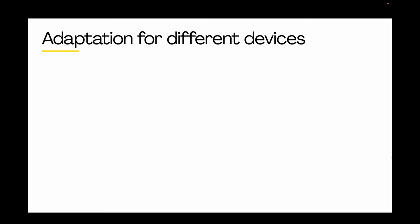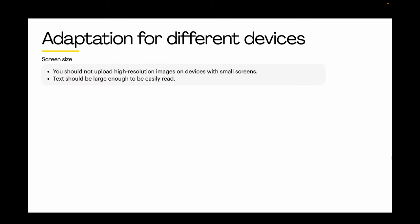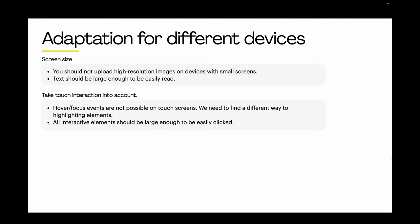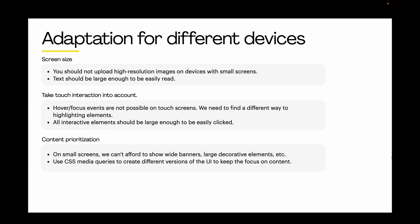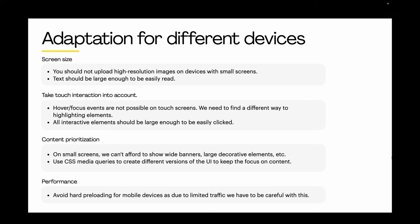The last topic is adaptation for different devices. For screen size, we should not upload high-resolution images on small screens, and text should be large enough to read. For touch interactions, hover and focus events are not possible on touch screens, so we need different ways to highlight elements, and all interactive elements should be large enough to click. For content prioritization, use CSS media queries to adapt the UI for smaller screens, focusing on content over decorative elements. For performance, avoid heavy loading on mobile devices, as mobile traffic is usually limited.